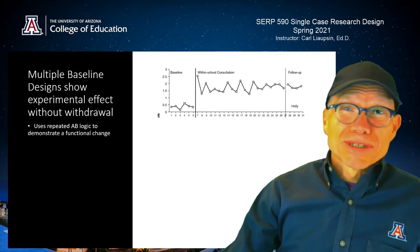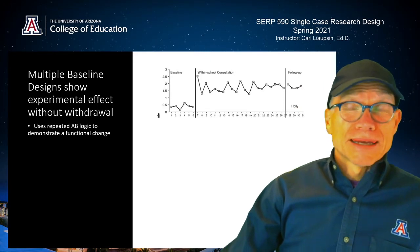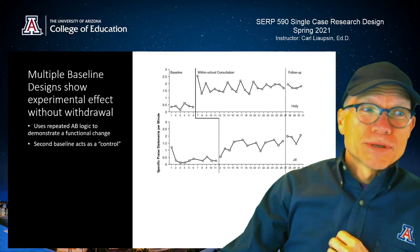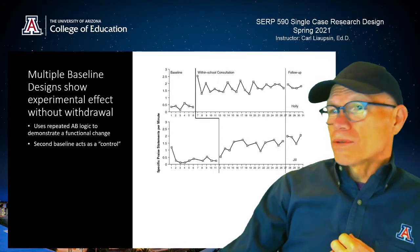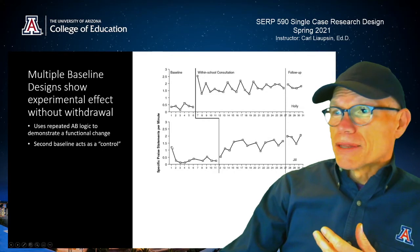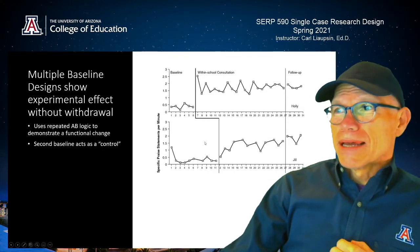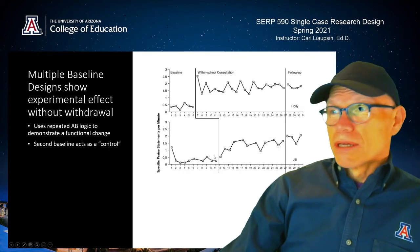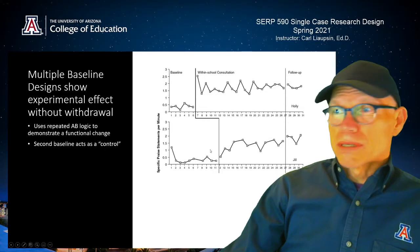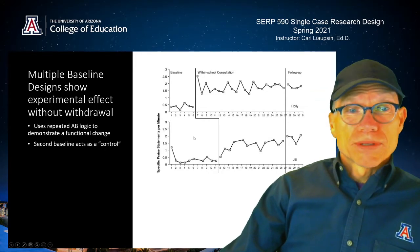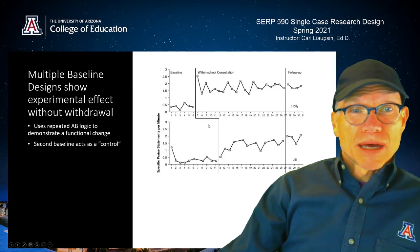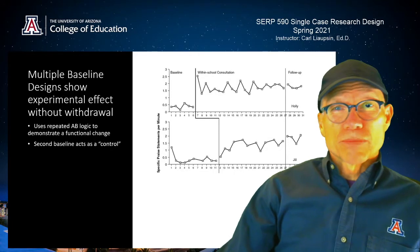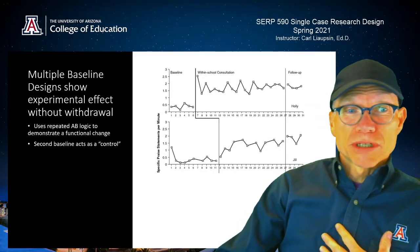Multiple baseline is a really simple way to go about that. What it says is: I'll just do it again. So in the first case, this study was conducted with Holly, but then they also have another student or client, Jill. They collect baseline data at the same time and even after they start intervention with Holly, they continue to collect baseline data with Jill and show another experimental effect with Jill once they implement.